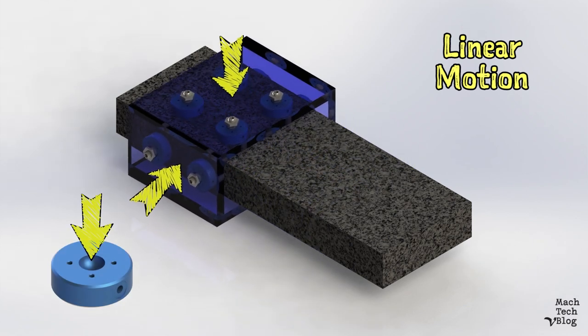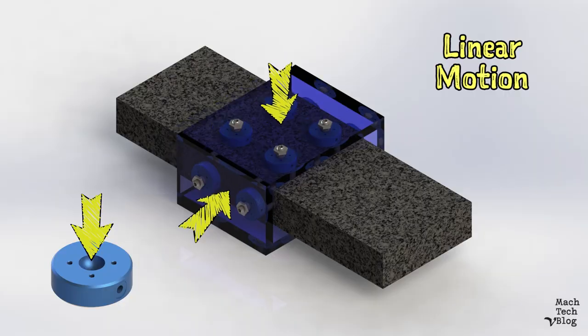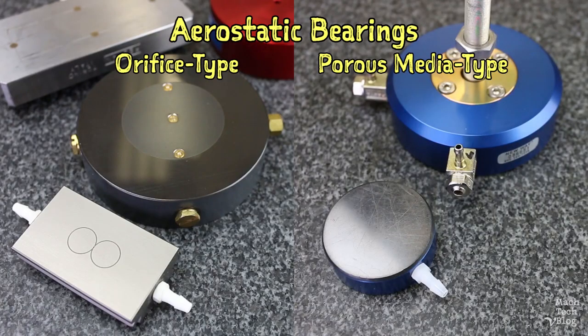Flat bearings are used to support axial loads, that is, loads perpendicular to their flat faces. Aerostatic bearings can further be split into two categories, orifice and porous media. The difference, again, comes down to how air is introduced into the gap.